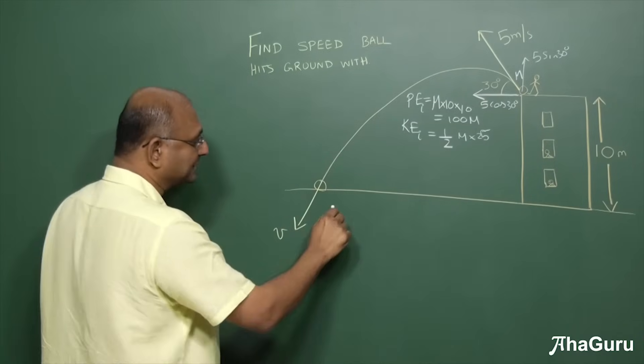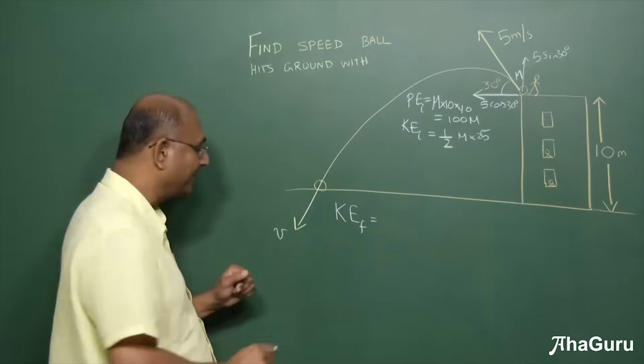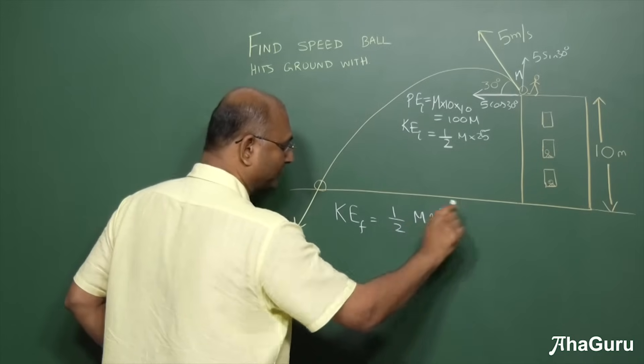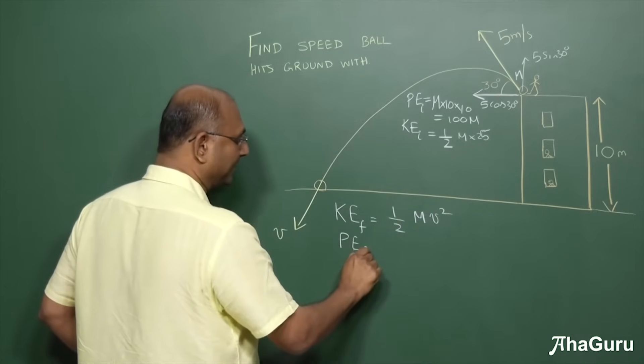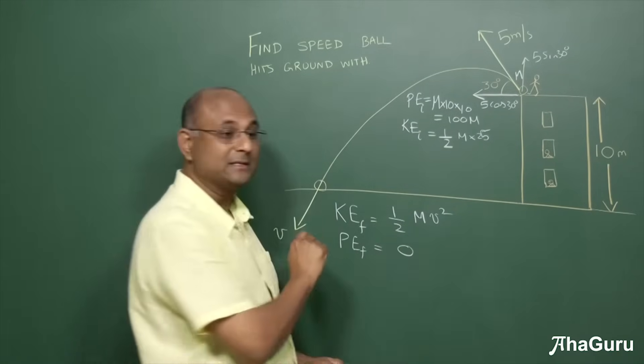Now at this point when it hits the ground, what is the kinetic energy of the ball? Let me call it kinetic energy final. It is half into M into V square. And what is the potential energy of the ball? Well, it is 0 because this is the ground level. So we are going to say that the potential energy is 0.